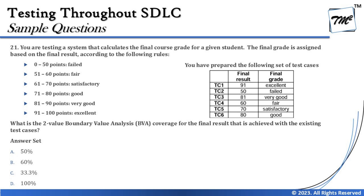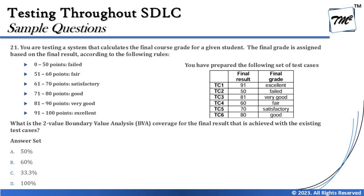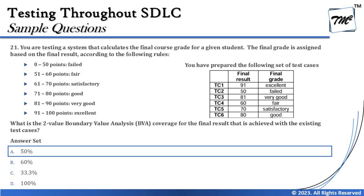Looking at the test cases: 91 is a boundary value, 50 is a boundary value, 81 is a boundary value, 60 is a boundary value, 70 is a boundary value, and 80 is also a boundary value. So we covered 6 out of 12, which gives us 50% coverage. The right answer for this question is A — 50% boundary value coverage is achieved with these test cases.